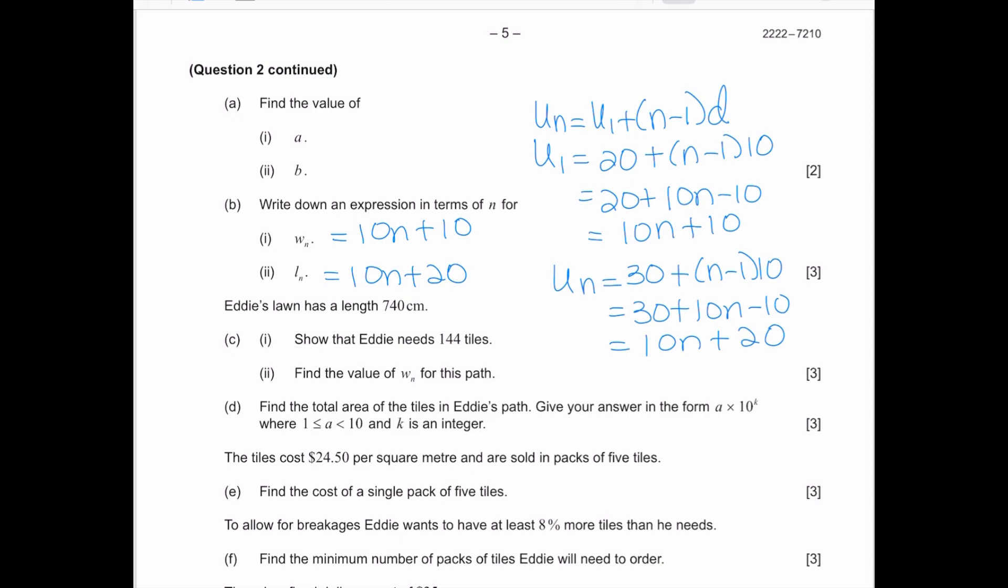Eddie's lawn has a length of 740 centimeters. Show that Eddie needs 144 tiles. Whenever it is a show that question, you cannot just take the answer they give you and then go backwards to say, 'Oh yeah, it makes sense that it's going to be 740 centimeters.' You can't just substitute and say, 'Oh yes, it works.' That's never going to work for a show that question. Instead, we go back to the information that's given.